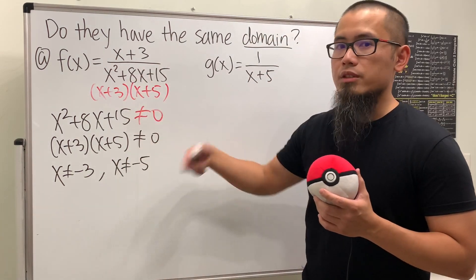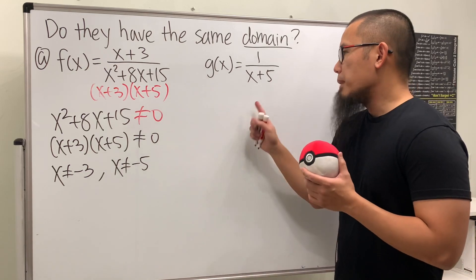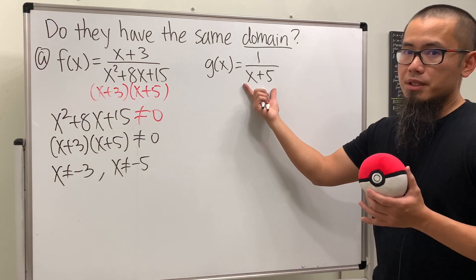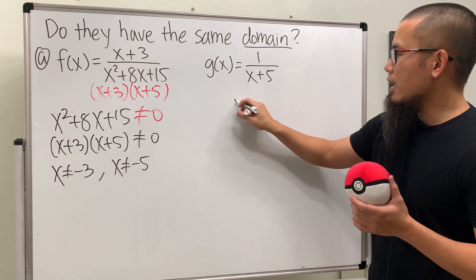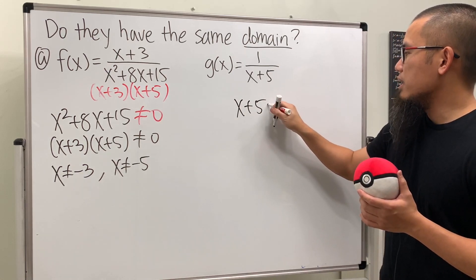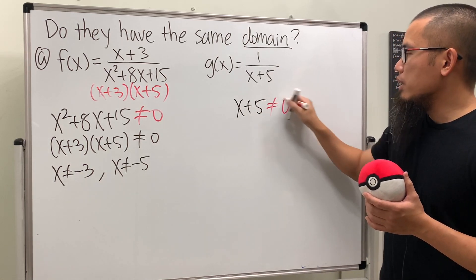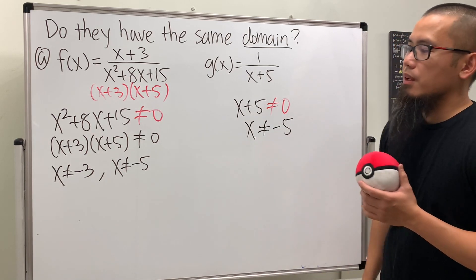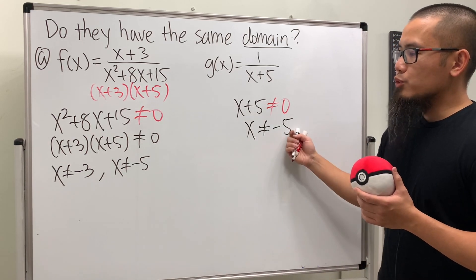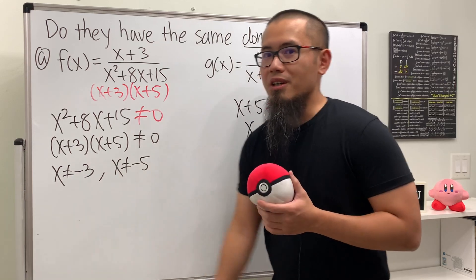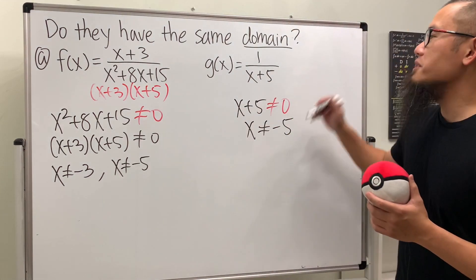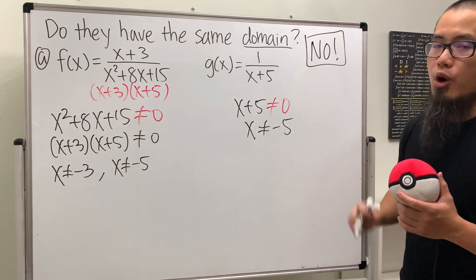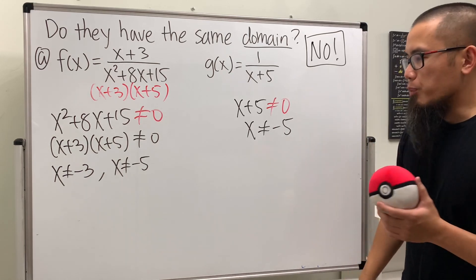Do not cancel anything out if you want to find the domain. For g of x we only have x plus 5 on the bottom, so we just need x plus 5 not equal to zero, meaning x cannot equal negative five — only one restriction. Two restrictions for f of x versus one restriction for g of x, so of course they have different domains. The answer is no.